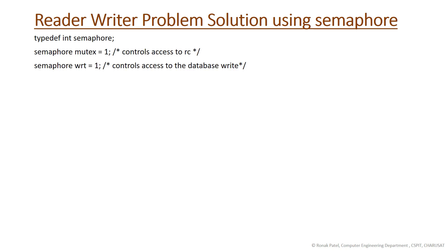For this we will use two semaphores named mutex and wrt, both initialized with 1. We are initializing the semaphore value with 1 to achieve mutual exclusion. The semaphore mutex controls access to reader processes, and the semaphore wrt controls access to the database for writing. There is also a variable called rc which counts the number of reader processes. Initially there is no reader, so rc is initialized to 0.